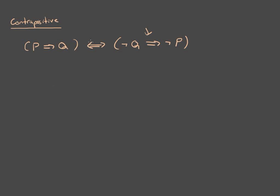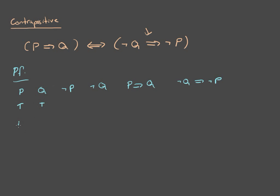So let's prove that, and unfortunately we have to do another one of these truth tables. I know they're not fun, but we will be done with this soon. We have P, Q, not P, not Q, P implies Q, and not Q implies not P. And we have four possible configurations, just as in the last video.